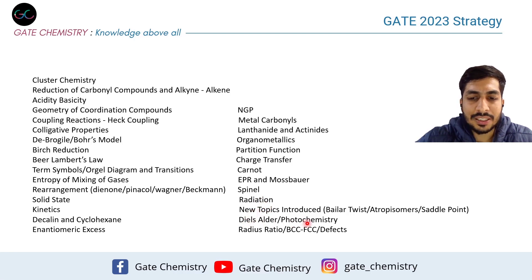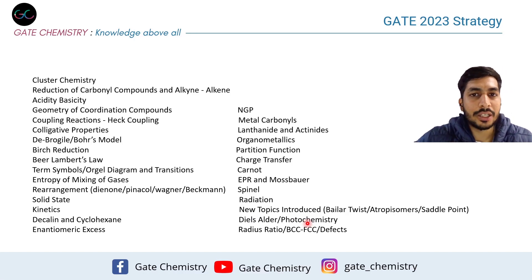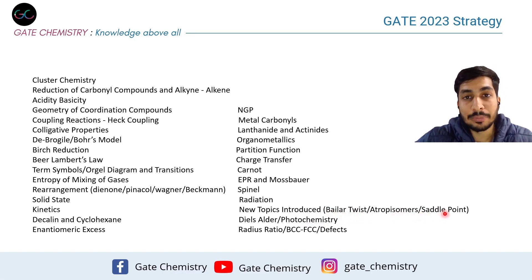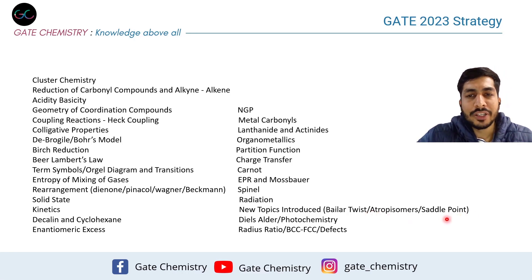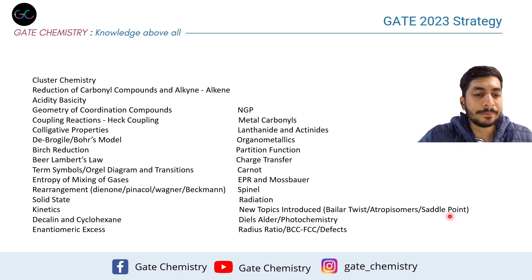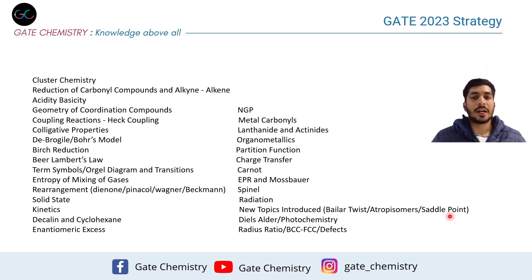Diels-Alder and photochemistry are again very important topics. A few new topics were introduced in GATE 2021 that are worth noting: Bailar twist, ambidentate isomers, and saddle point. Since these are newer topics, they might appear in the 2023 exam as well. I have short videos on Bailar twist and ambidentate isomers, but not on saddle point — you'll find plenty of content on saddle point online.